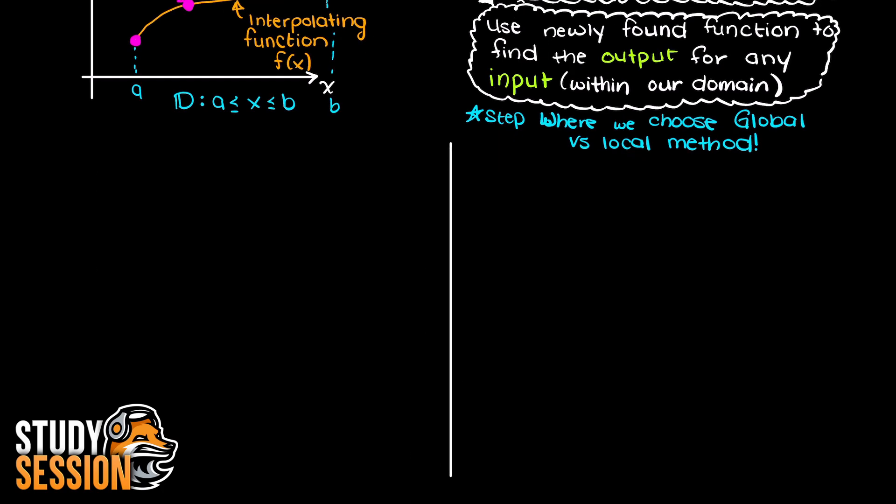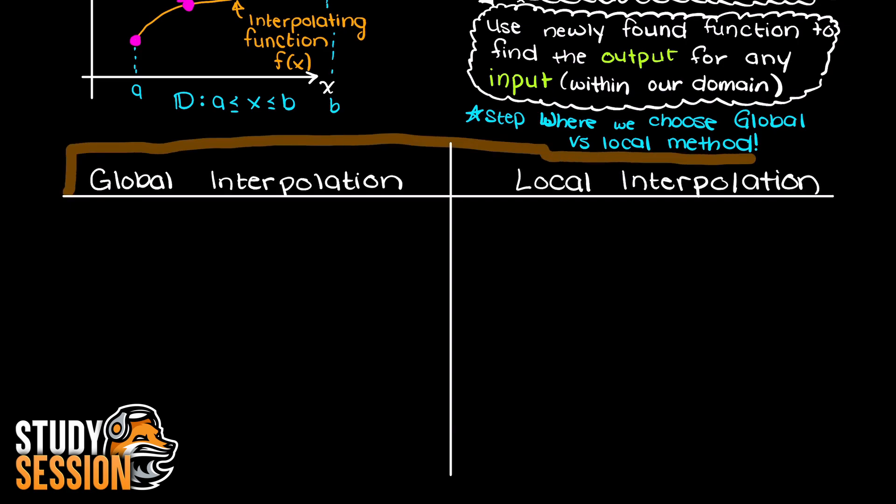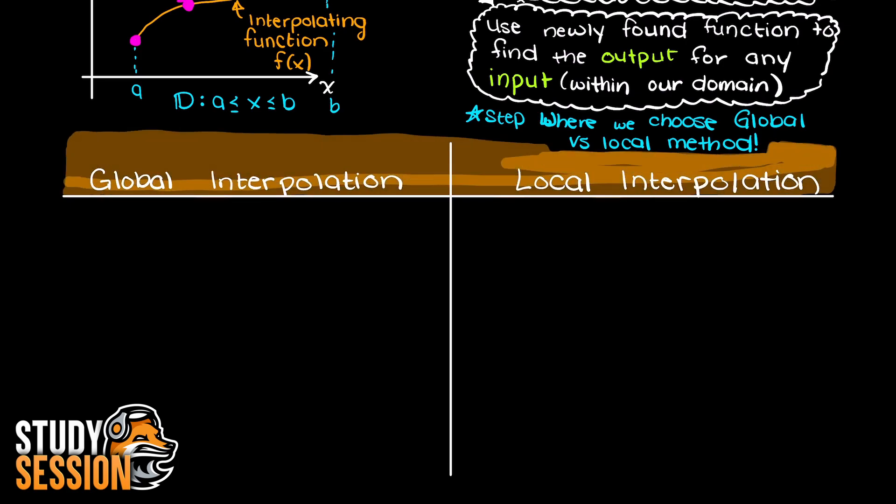Now we are ready to begin talking about global versus local interpolation methods. Let's begin with global interpolation methods as we have already seen a couple of these. The key difference between global versus local interpolation methods is the amount of our data set that we are going to use to find the interpolating polynomial.